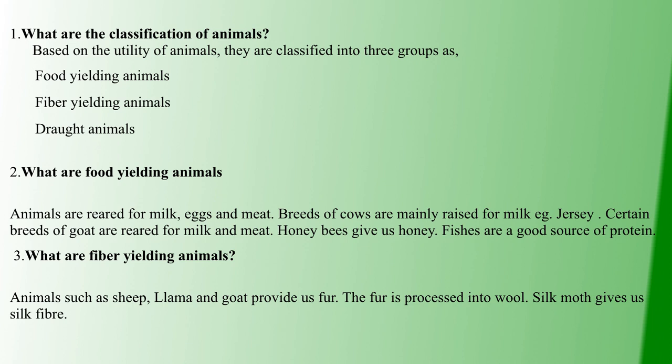Second question: what are food yielding animals? These are animals that provide milk, eggs, and meat. Examples include Jersey cows for milk, goats for milk and meat, honeybees for honey, and fish, which is a good source of protein.